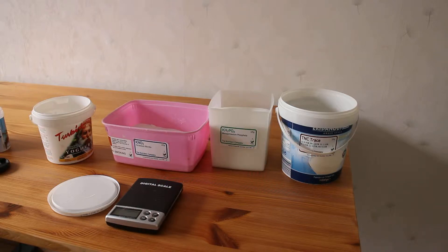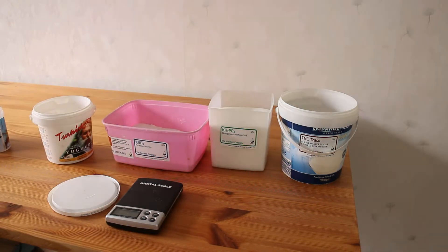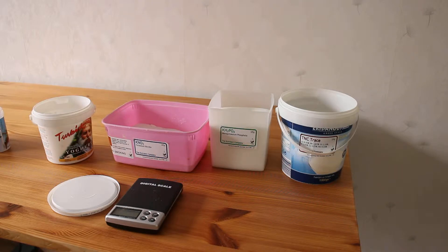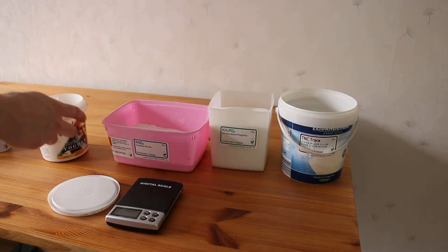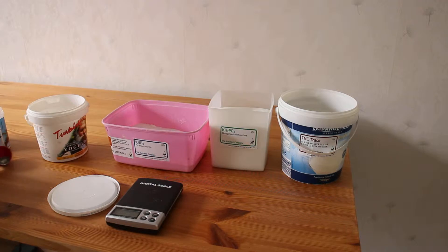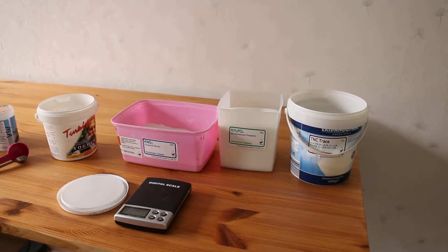Okay, today I am going to talk about aquarium fertilization and the method that I am using. I'm using the so-called Estimated Index method, which means that I am adding dry fertilization. I am adding four different powders.